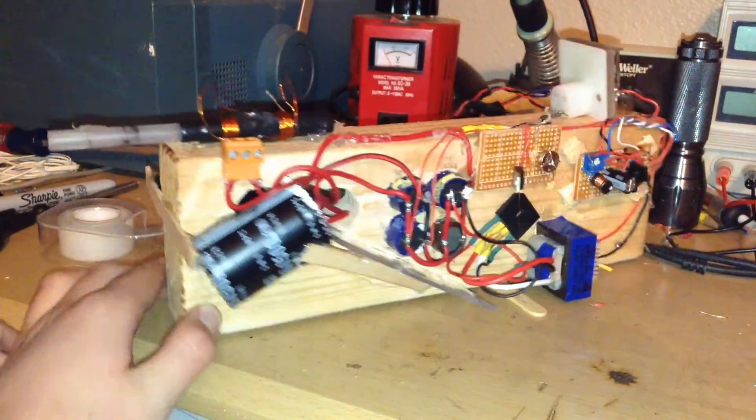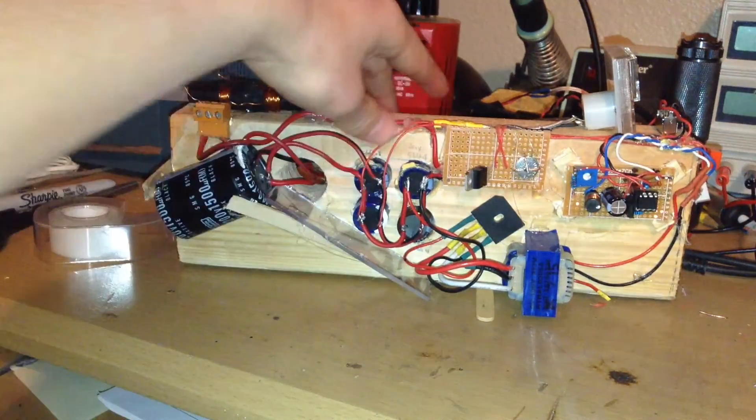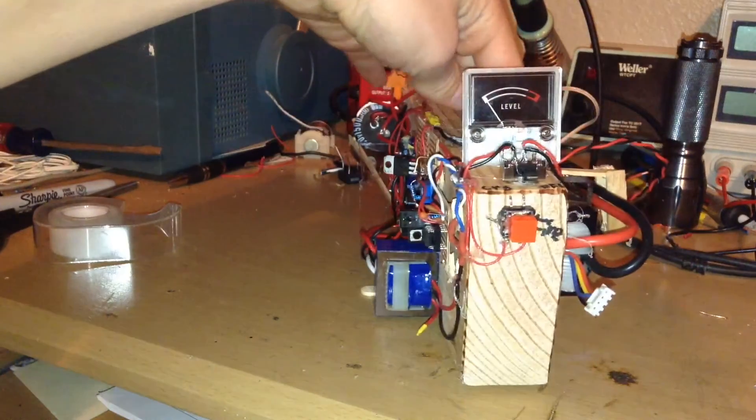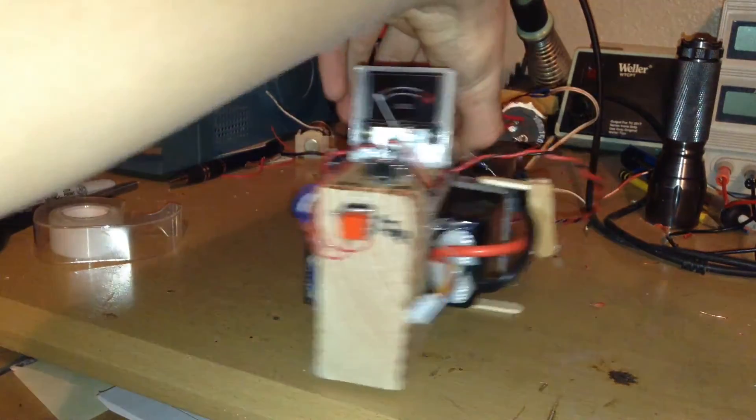The whole gun is built on a piece of plywood. I drilled holes in the piece of plywood to fit the capacitors so I can save space. This is the whole coil gun.